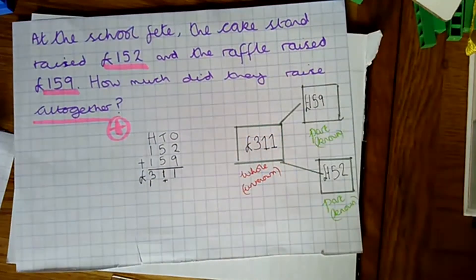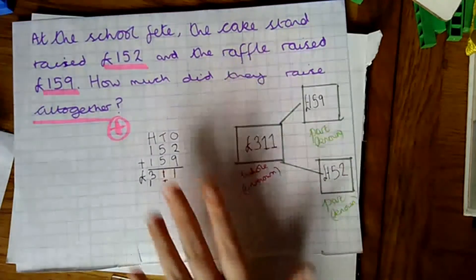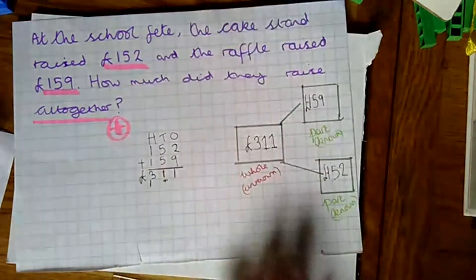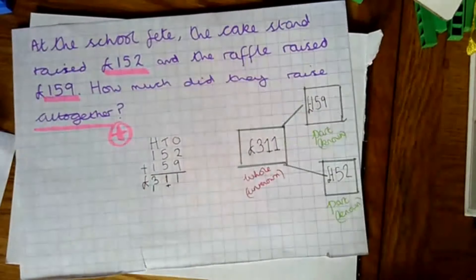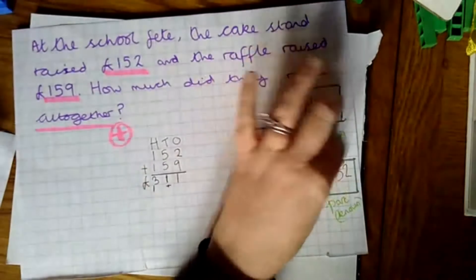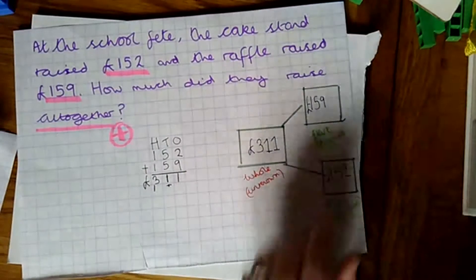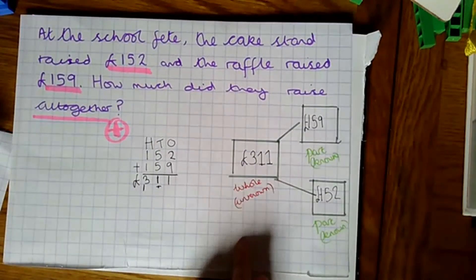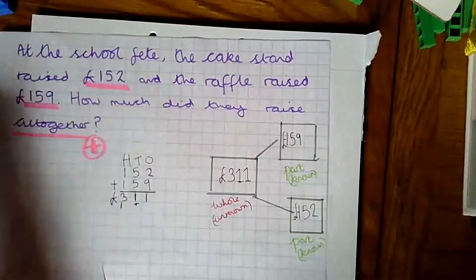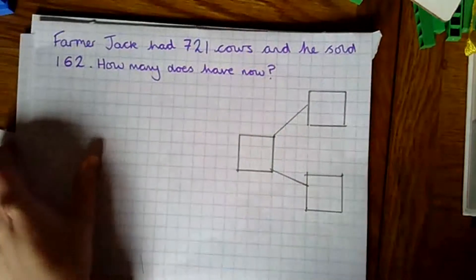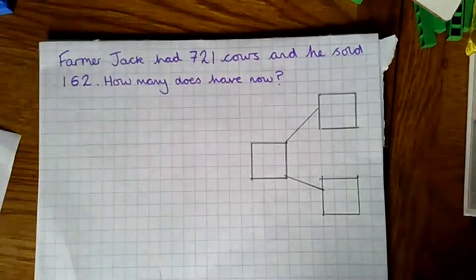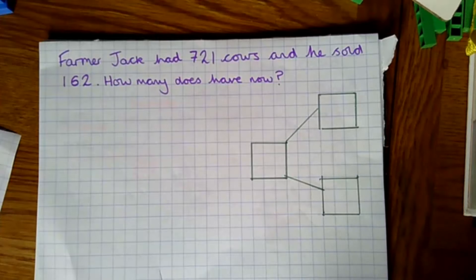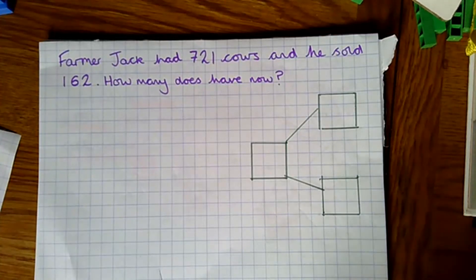We've now completed our part-part-whole model — the unknown was our whole, which we achieved by adding my two parts together. We're now going to look at it from another perspective because the whole is not always the unknown part. Let's have a look at another example: Farmer Jack had 721 cows and he sold 162 — how many does he have now?